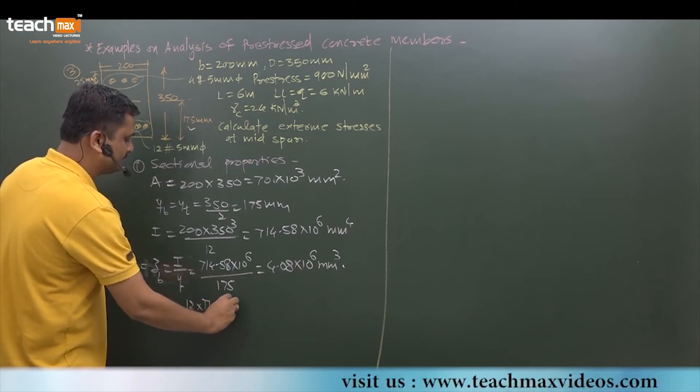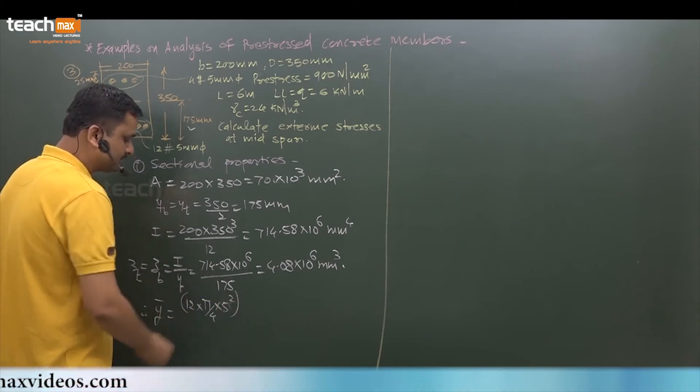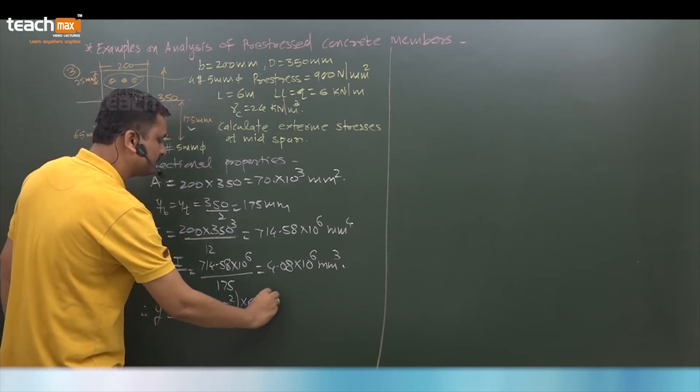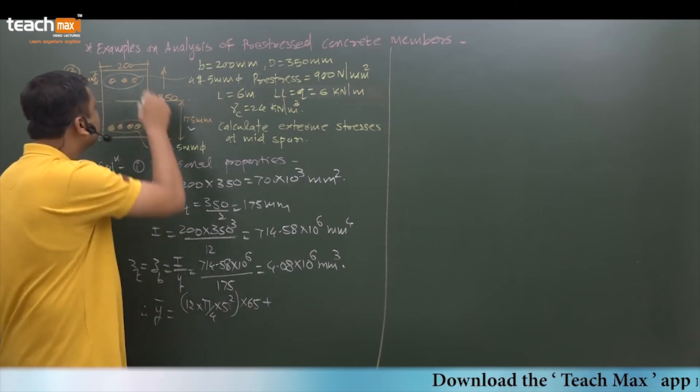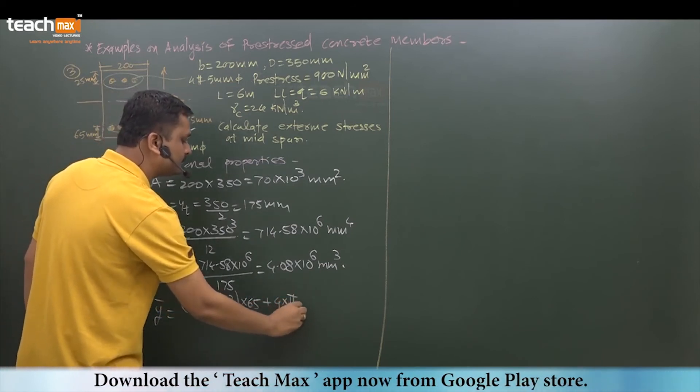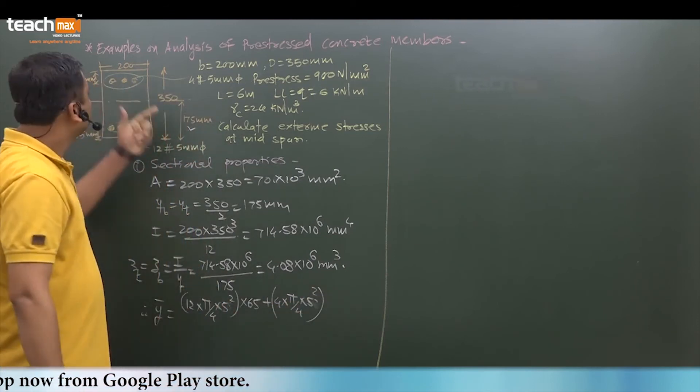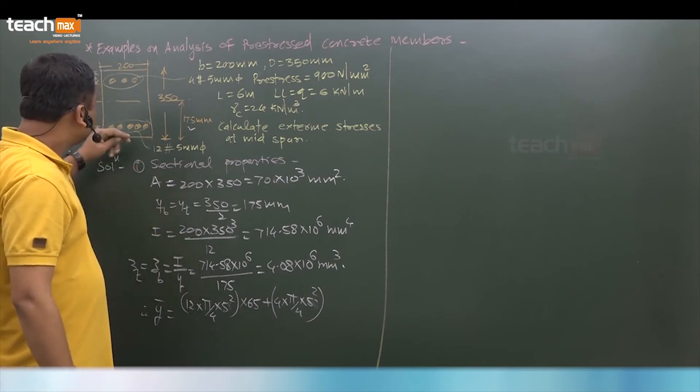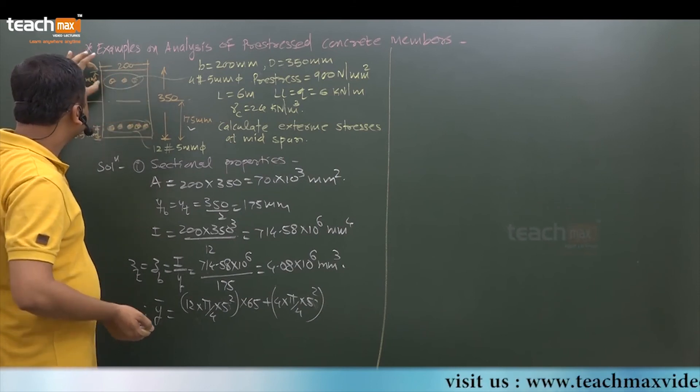So CGy bar we can easily find out. First, 12 wires of 5mm diameter - this is the area of that wire and it is from bottom at 65mm. A1 into y1 plus A2 into y2. What is A2? A2 is 4 times pi by 4, 5 squared - this is the area of these 4 wires.